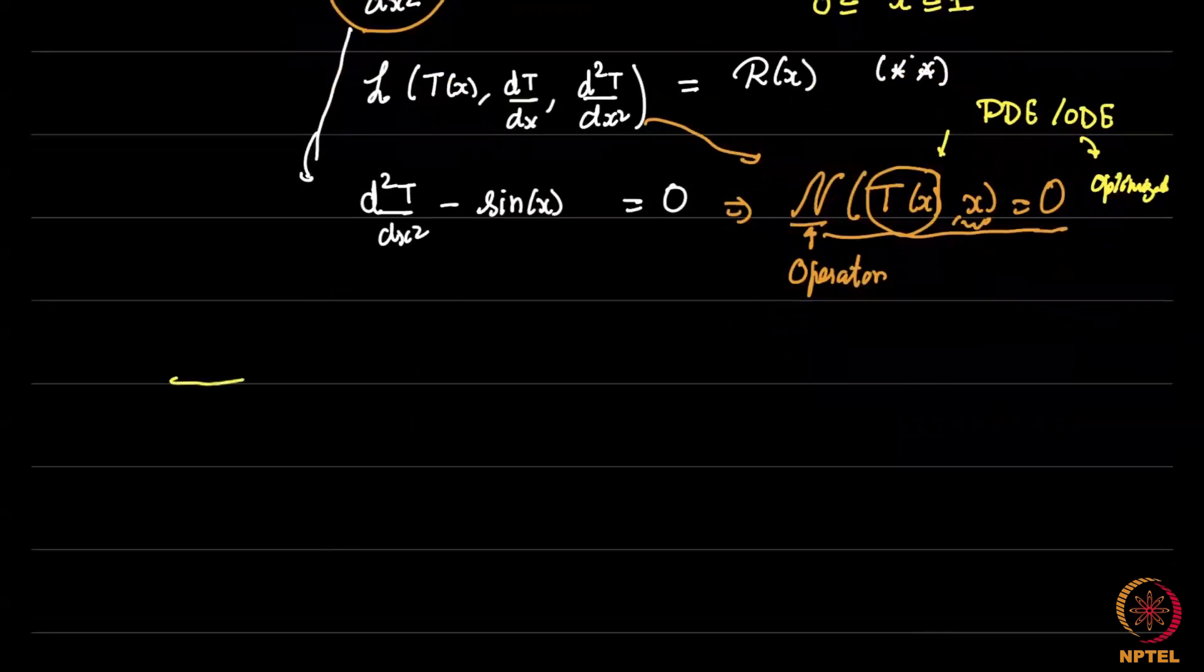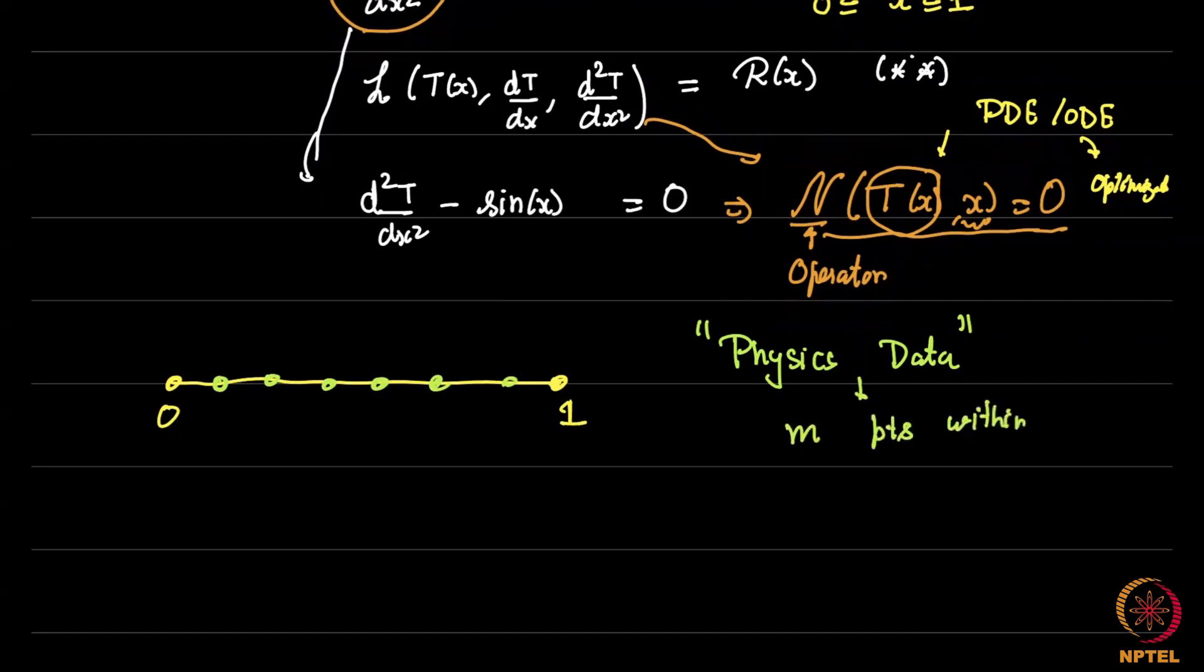Now what we know is all we do is we take this domain 0 to 1 and decide on getting some physics data. Now just imagine a parallel problem where you are doing some housing price prediction or something of that sort. If we are doing some prediction of some engineering problem or we are trying to predict some stock price, we would sample it at a few points. Similarly, here we are sampling the physics at few points. Let us say we are sampling it at m points within the domain. And these m points could be let us say just for the sake of argument let me just give some value let us say 35 points. So m = 35 points I am sampling 1, 2, 3, 4, etc. till 35.